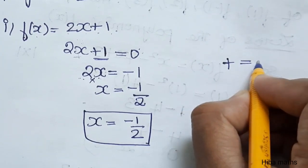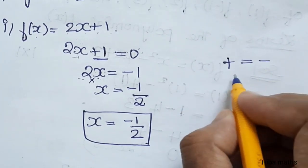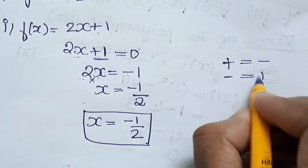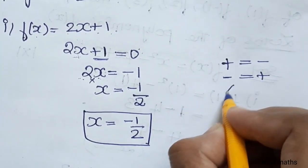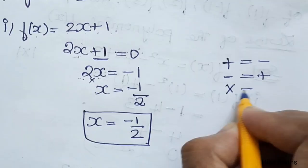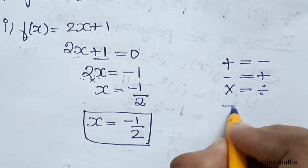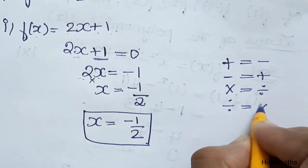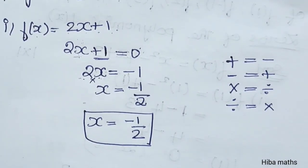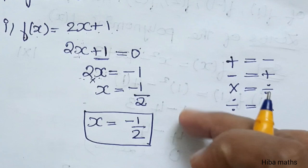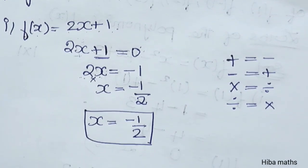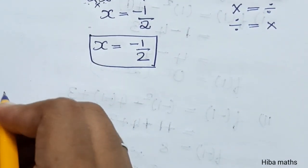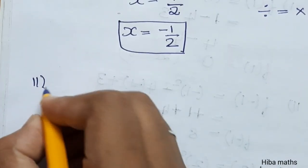Sum: minus changes to plus. Minus changes to plus. Multiplication changes to division, and division changes to multiplication. It's very easy to solve this. Second subdivision.